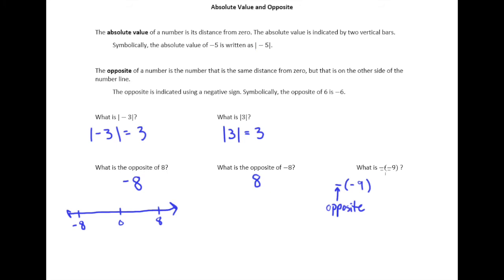So really, when I ask you to figure out what this is, I'm asking you to find the opposite of negative 9. Well, what is the opposite of negative 9? The number the same distance from zero on the other side of the number line would have to be 9.